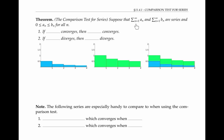Suppose that the sum of a sub n and the sum of b sub n are series, and suppose that the terms of the series are always greater than or equal to zero, and that a sub n is less than or equal to b sub n for all n.